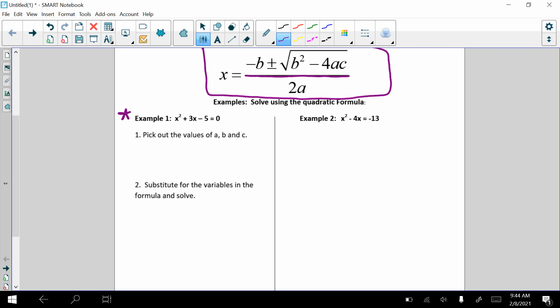So first of all, if we look at example number one, we have x squared plus 3x minus 5 equals zero. Let's write out what our variables will be. So first of all, a is 1, b is the coefficient of the linear term, so it's 3, and c is negative 5.